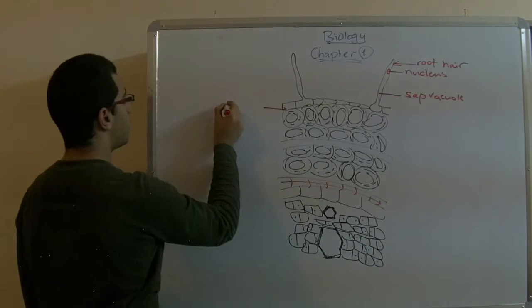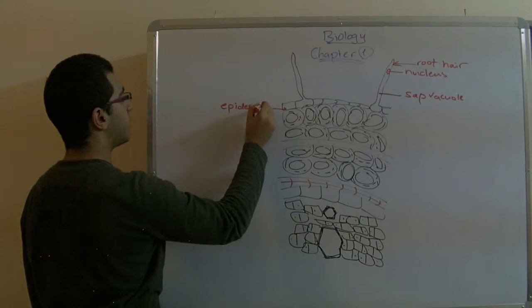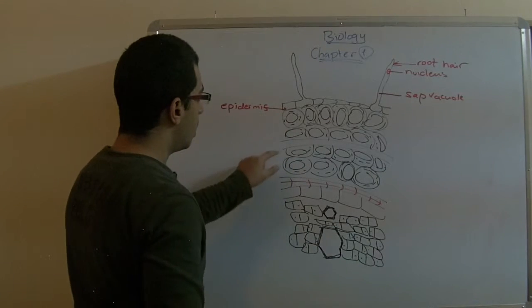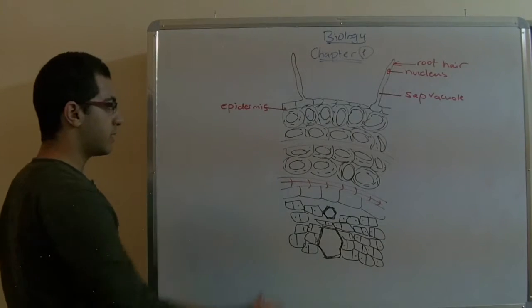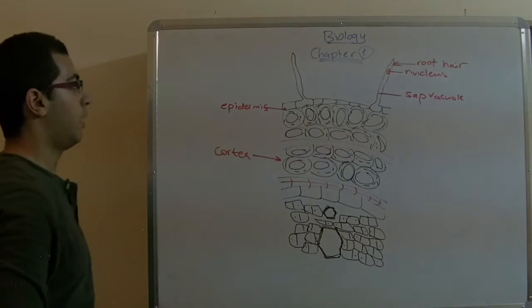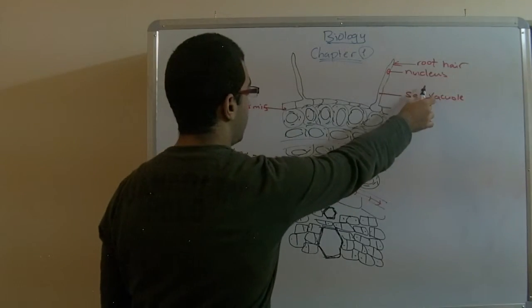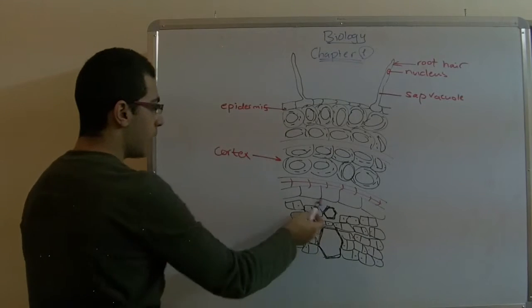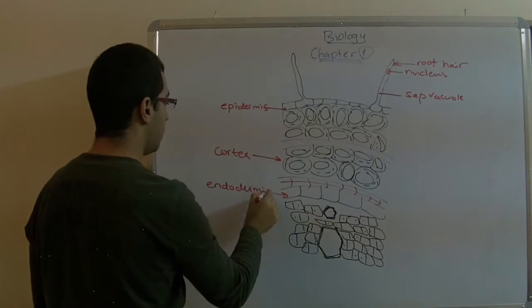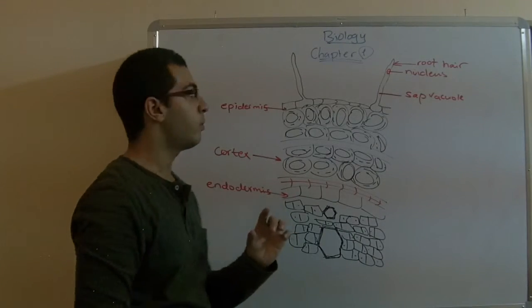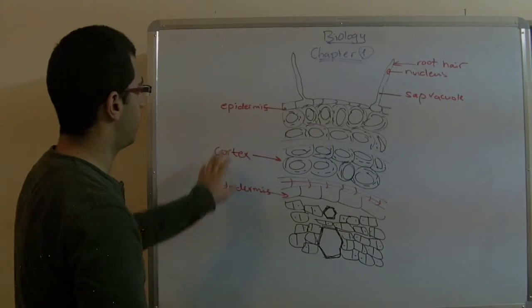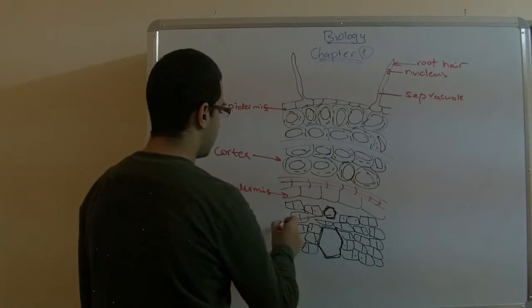Here we have this layer called the epidermis, which resembles the skin of the root. The second layer of cells is called the cortex. So we have: root hair, nucleus, cell vacuole, epidermis, cortex, and this is called the endodermis. Just as the skin of the human consists of the epidermis and the endodermis, the plant also has two layers — the epidermis and the endodermis.